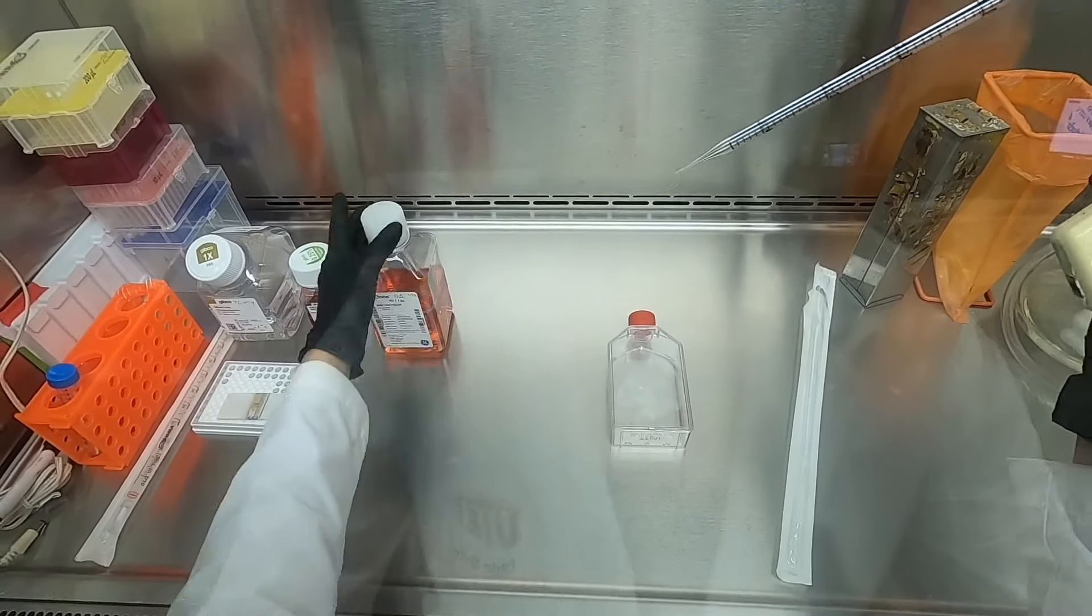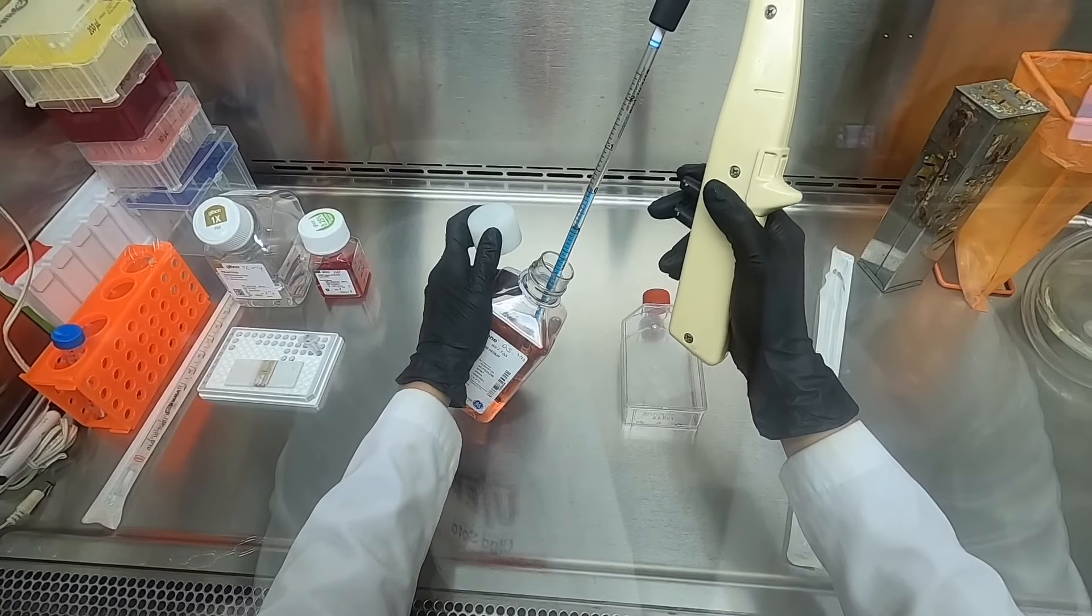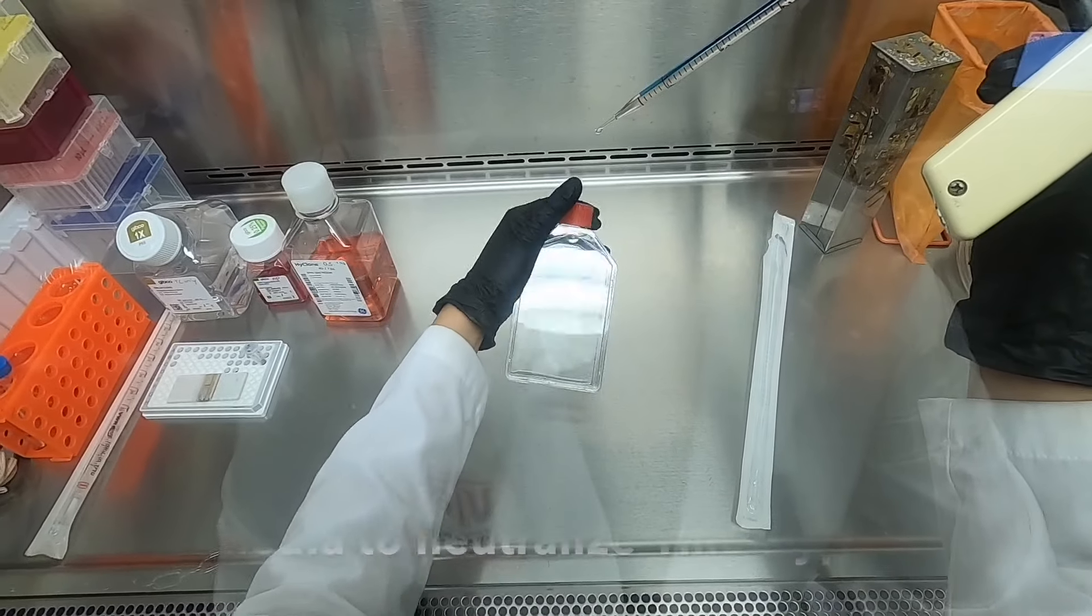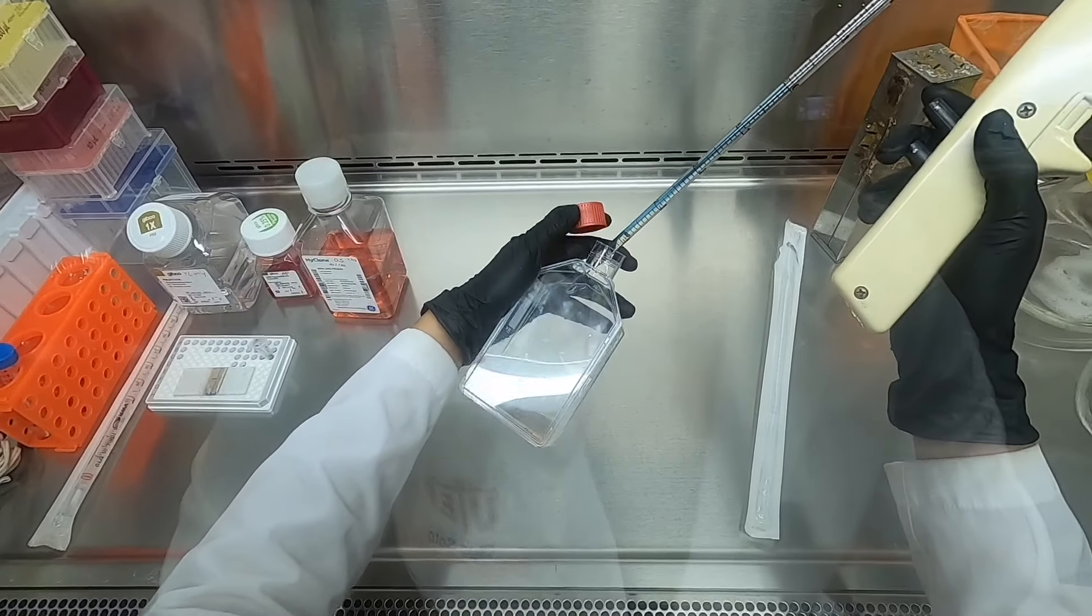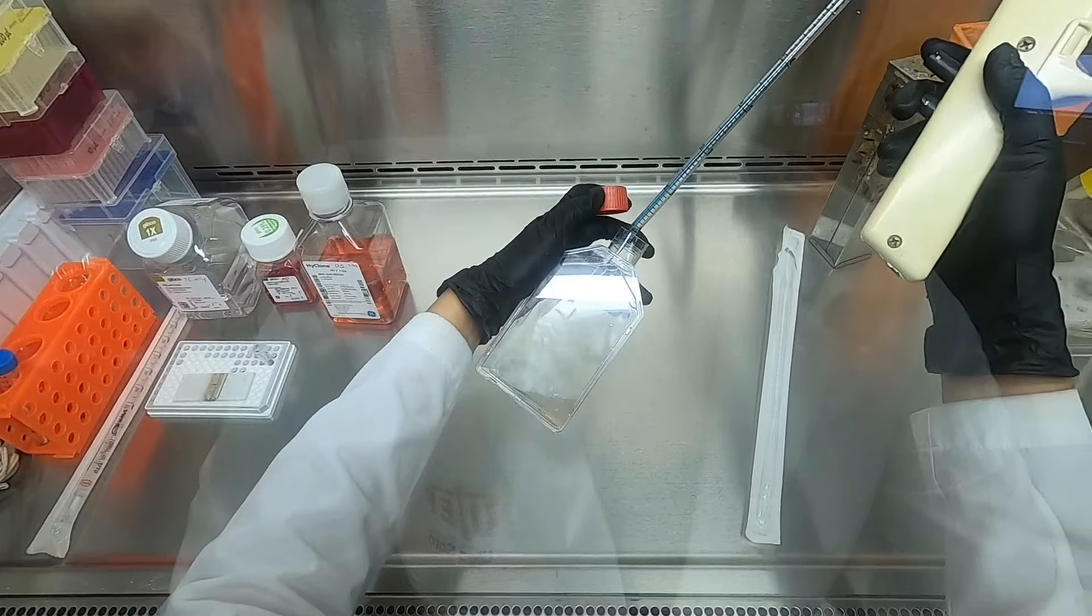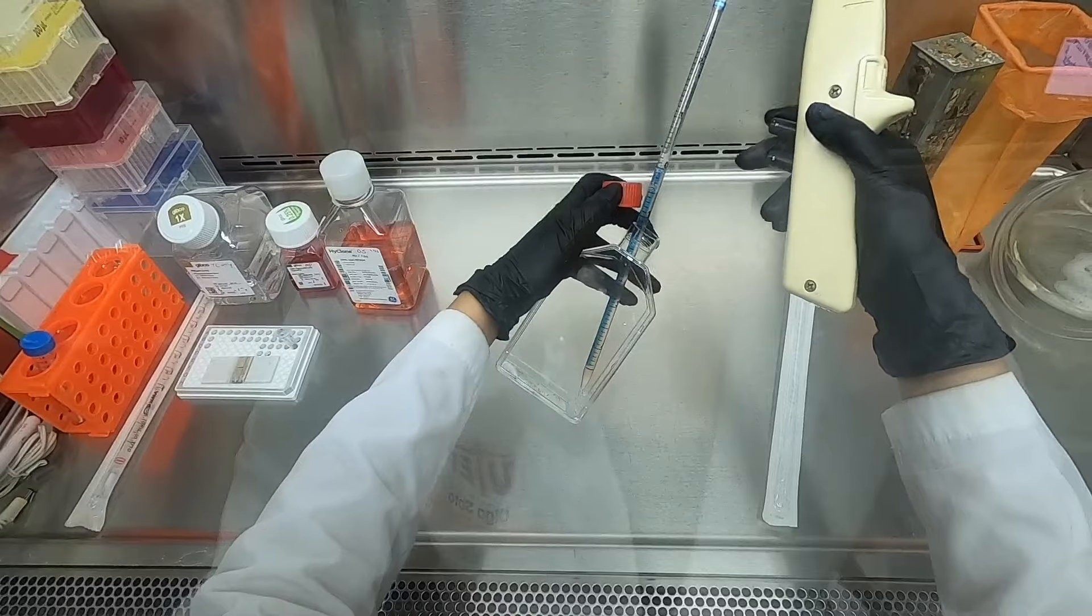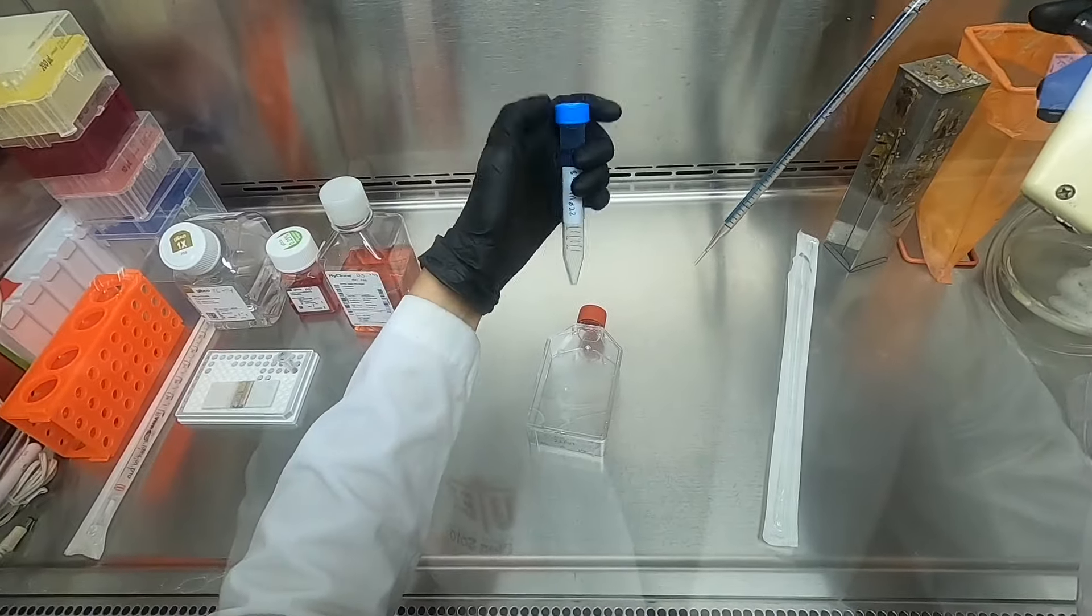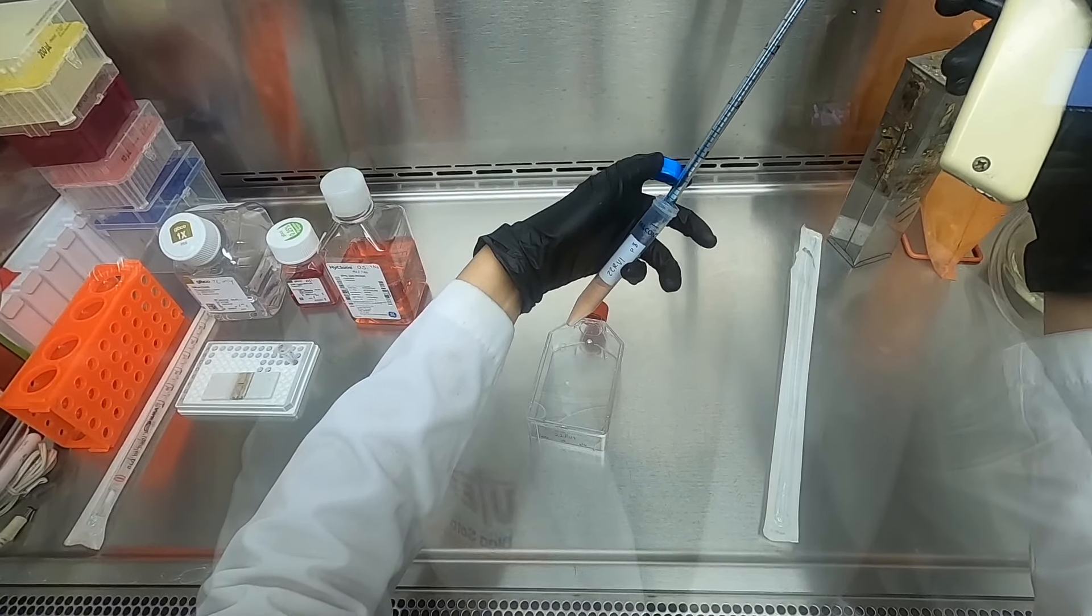Now that most of the cells have detached from the surface, we will proceed to neutralize or inactivate the trypsin using FBS-containing media. Aside from being nutrient-rich, FBS also contains protease inhibitors. And because trypsin is a protease, the FBS will help us inhibit its activity. This time we are adding the media directly on the side of the flask that contains the cells. The purpose of this is to loosen any cells that have not completely detached and to collect all the cells at the bottom of the flask. We can now transfer the cell suspension into our labeled 15 ml conical tube.